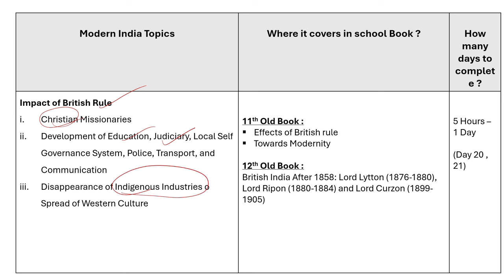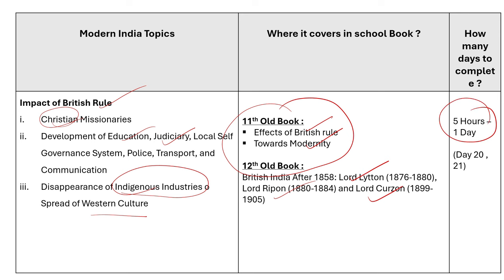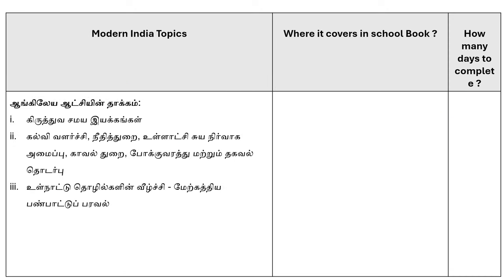Next, we are going to talk about Western culture and its impact. This is the old book. Topics include: Effect of British Rule towards modernity, British India under Lord Lytton, Lord Ripon, and Lord Curzon. We are going to study this topic for about 5 to 10 hours — Day 20 and 21.